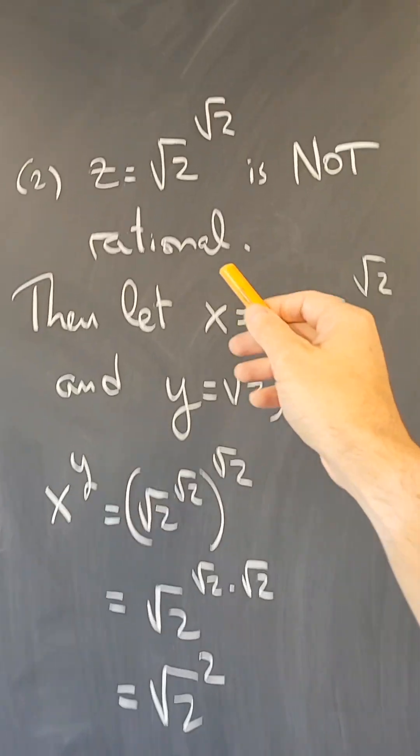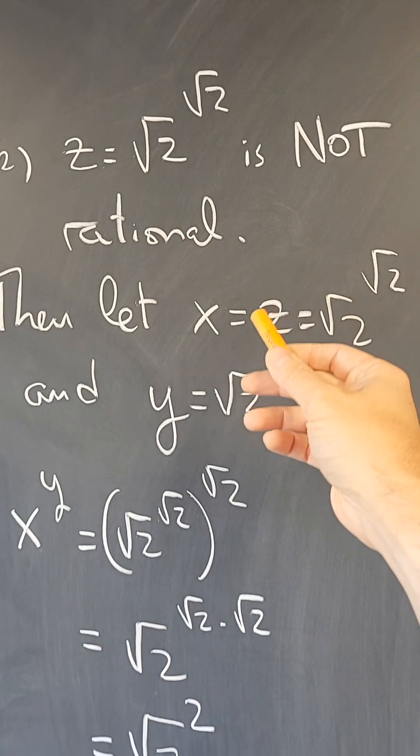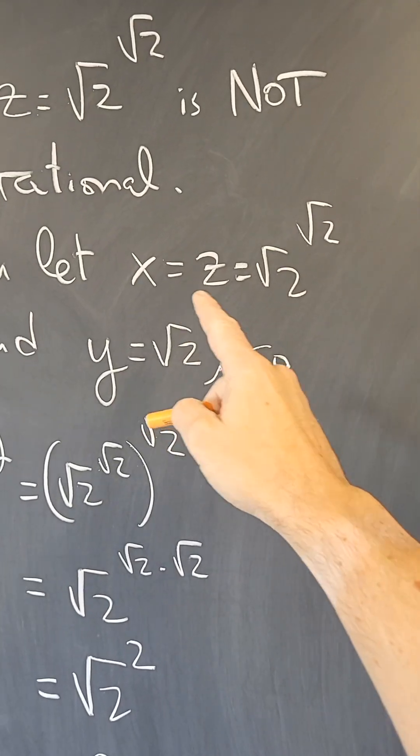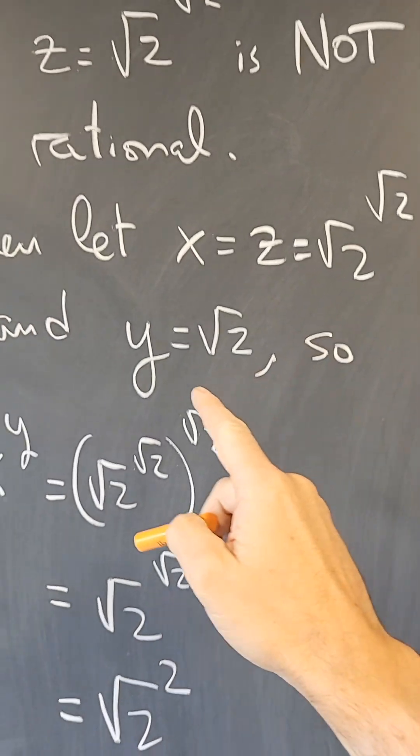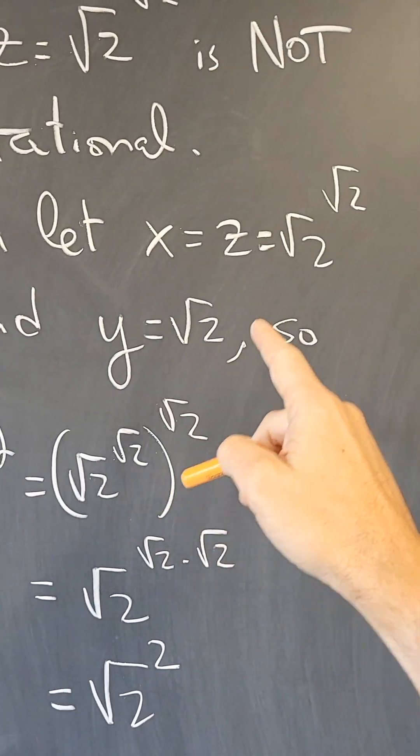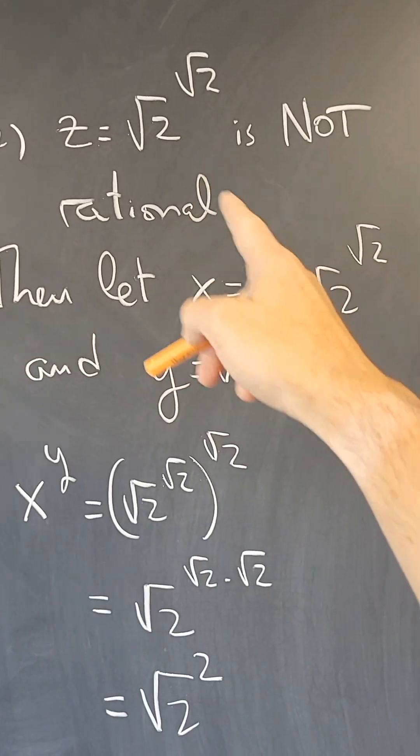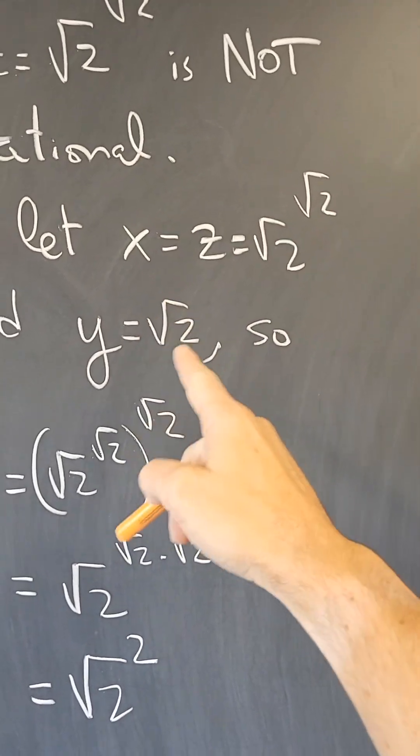The other option is that this number is not rational. And then I can take x to be that number, square root of 2 to the square root of 2, and take y to be a square root of 2. Then this is not rational. So this is irrational. This is irrational.